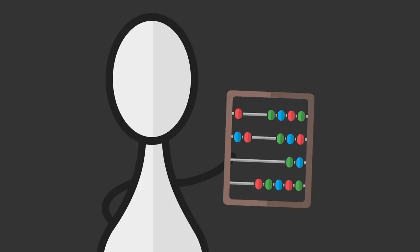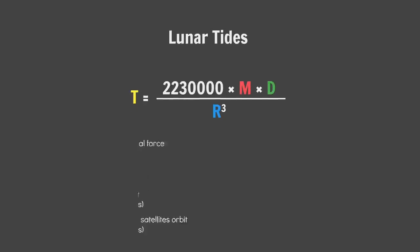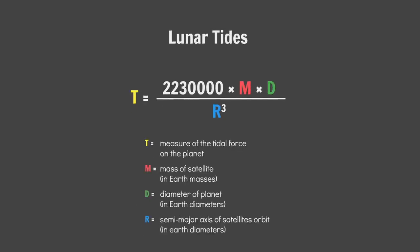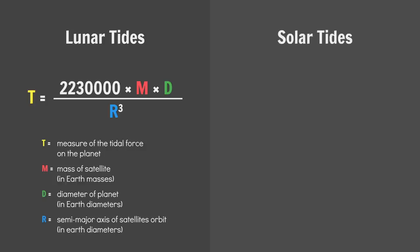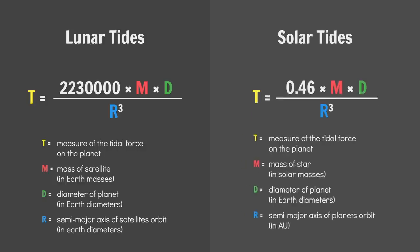There'll be a calculator in the description, so I'm not going to dwell too much on the math. But, to measure the tidal forces exerted by your major moon on your planet, use this equation. With these inputs. For the tidal forces exerted by a star on your planet, use this fella. But with these inputs. Run the numbers.